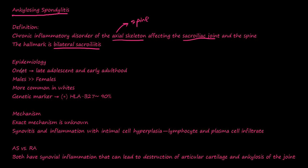The epidemiology: onset is late adolescent or early adulthood, from about 15-16 to 30. Males get it way more than females, and it's more common in whites. The genetic marker is HLA-B27 — about 90% of all patients with AS have a positive HLA-B27 result.